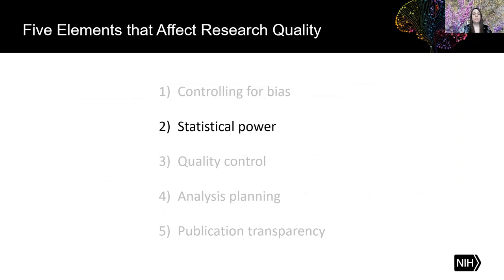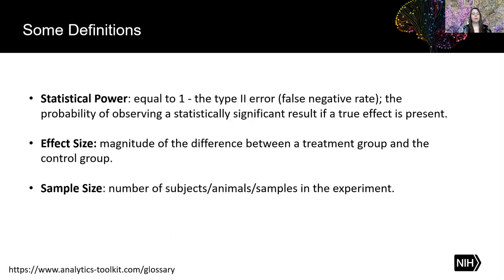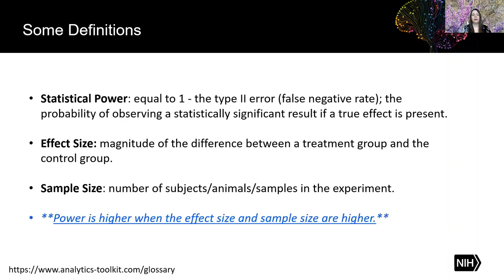Let's move on to the second element: statistical power. Statistical power is equal to 1 minus the type 2 error, also known as the false negative rate — the probability of observing a statistically significant result if a true effect is present. This depends on both the effect size — the magnitude of the difference between a treatment group and the control group — and the sample size. Power is higher when both the effect size and sample size are higher.